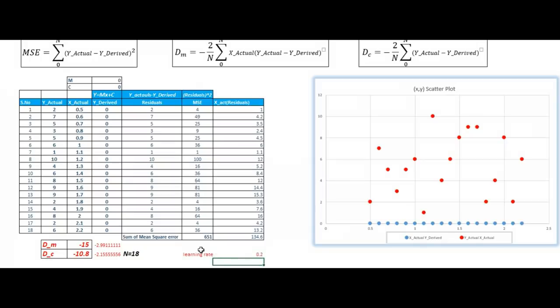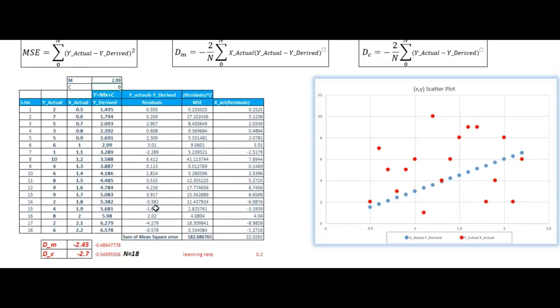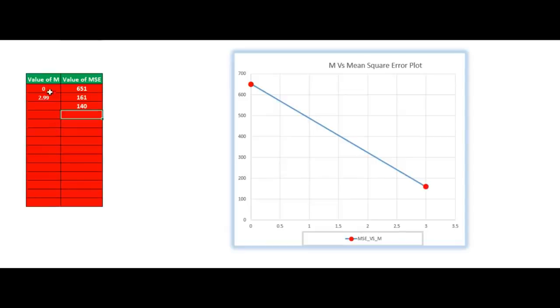So let's take a learning rate of 0.2 over here. So we will multiply our dm and dc by these learning rates. Let's deduct these values from our current m and current c. So if I'll subtract 0, minus minus 2.99, that will be 2.99 for m and 2.15 for c. Let's also check the curve that how much reduction in the mean square error we are getting after applying gradient descent to our function.